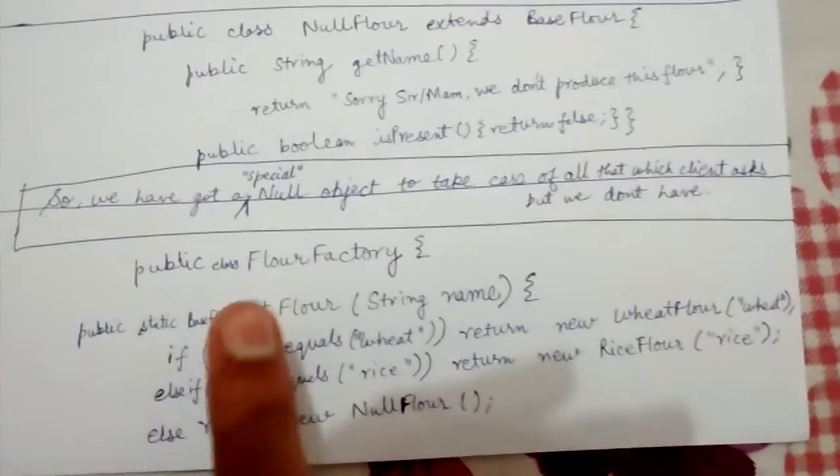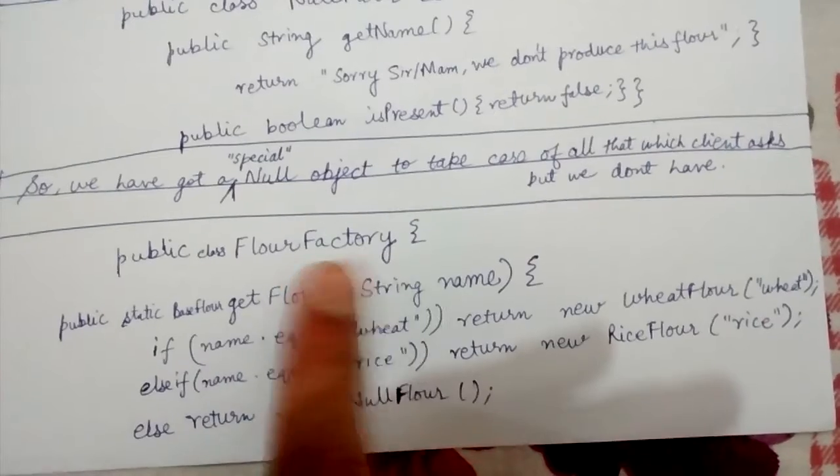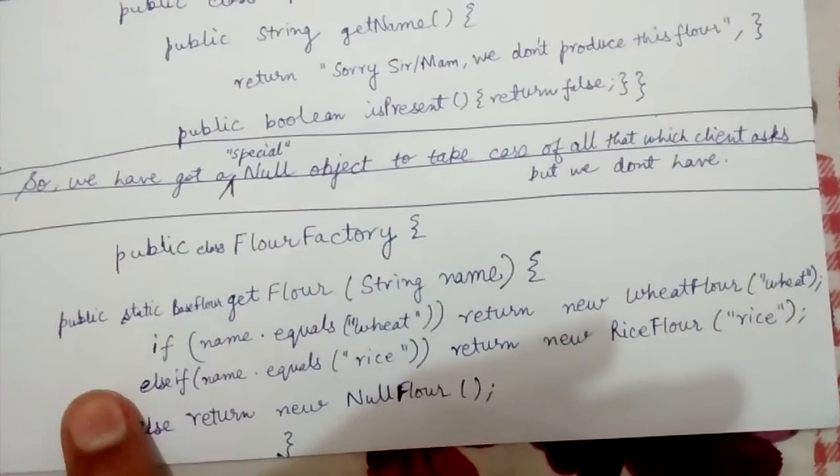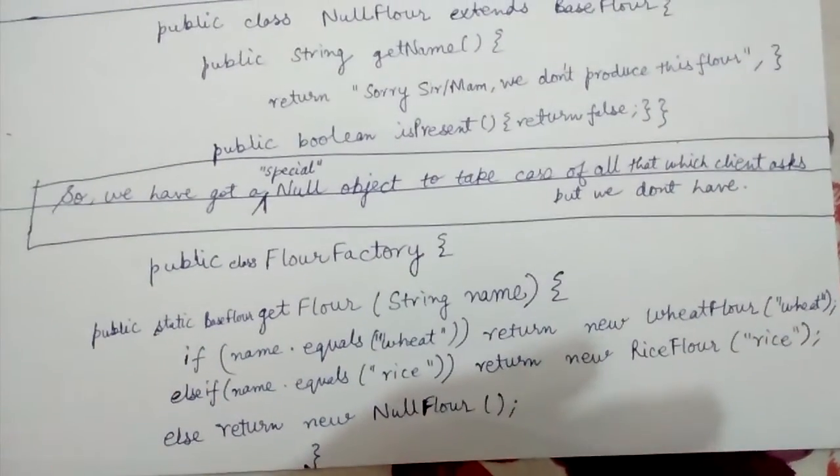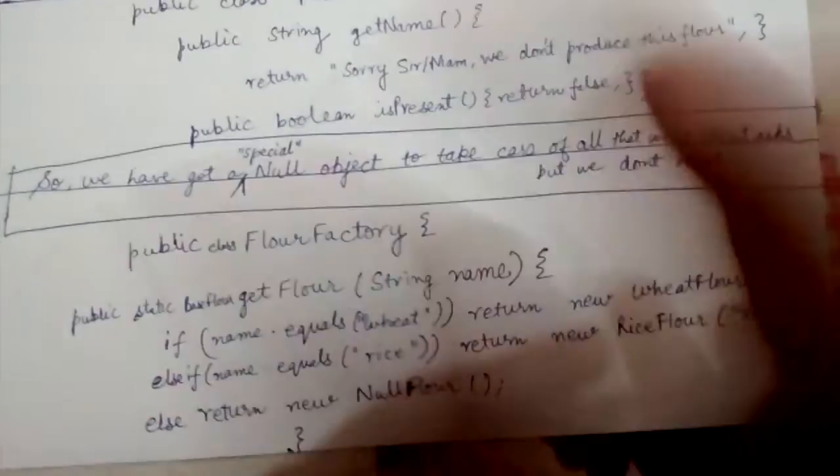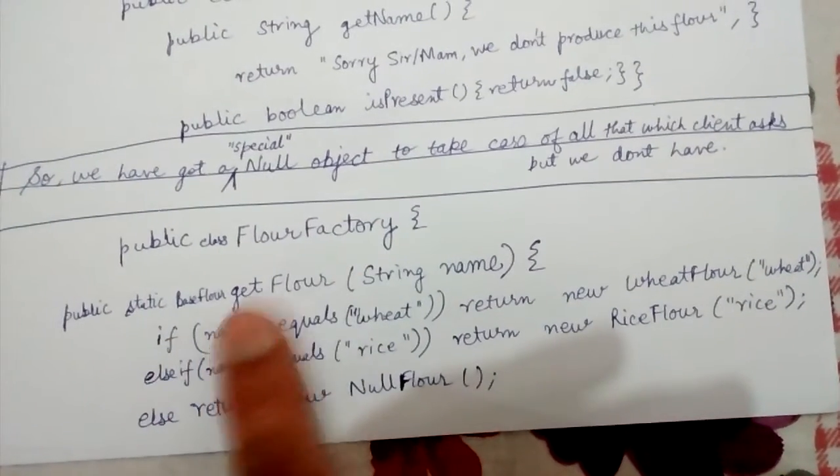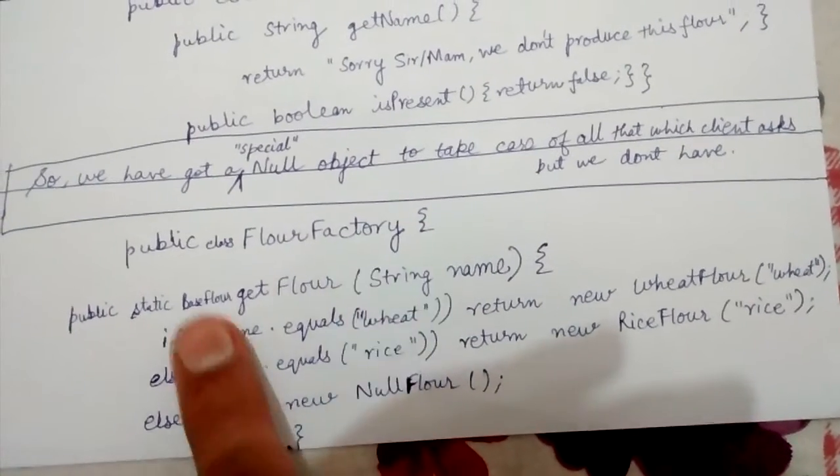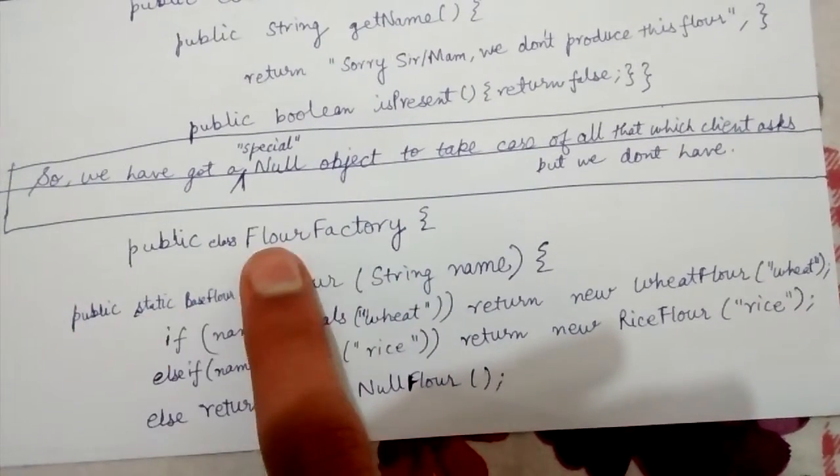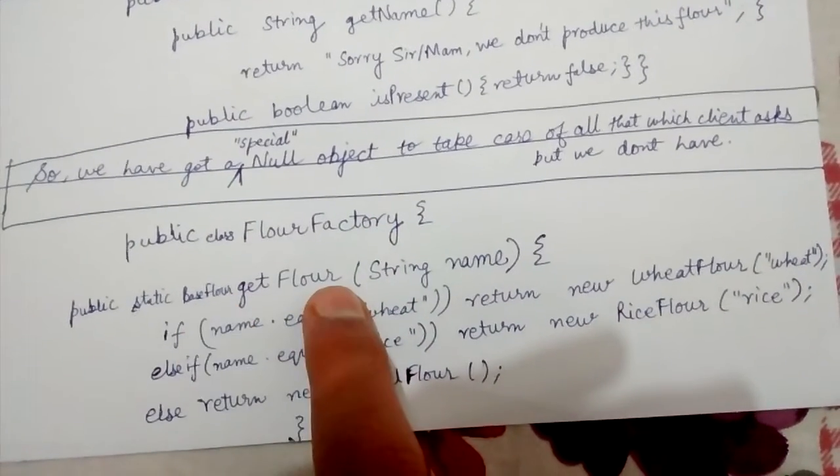This is the FlourFactory class. For those who have not studied the factory design pattern, I request you to look at my factory design pattern video and come back. When we ask for an instance of flour using the getFlour method, this is a static method that can be called on the FlourFactory class itself.